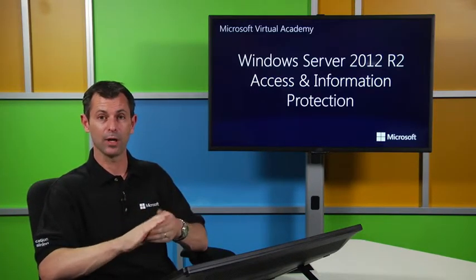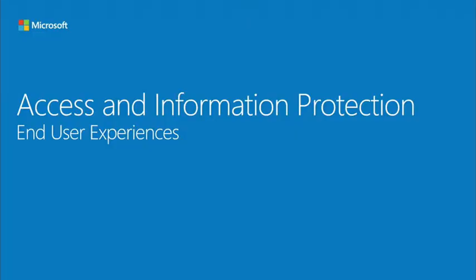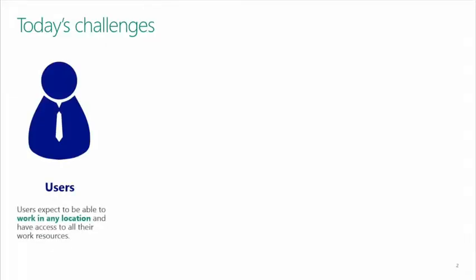We're going to start with a few slides and then cut over and do some demo. First section: end user experiences. If we think about where we started with access and information protection, it all starts with the user. Users just want to work in any location on any device. They don't understand they're on a different platform — they just use their device and expect to have access to all of that information and all the resources, no matter what device or platform they are on.